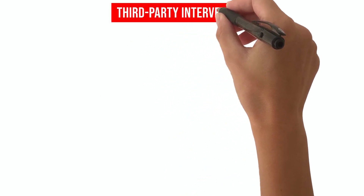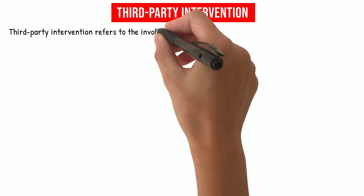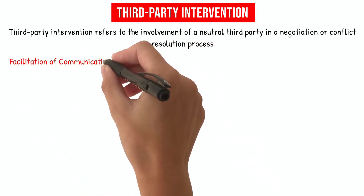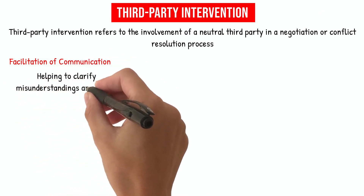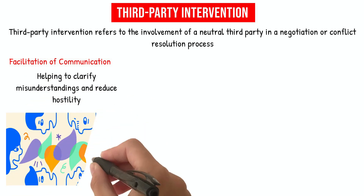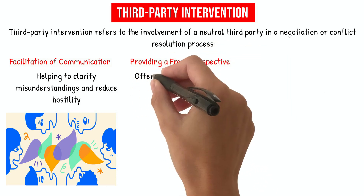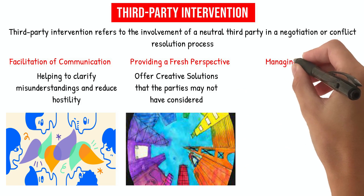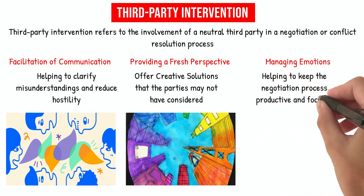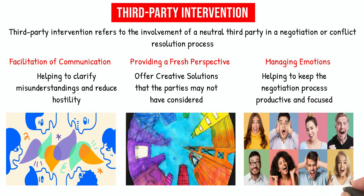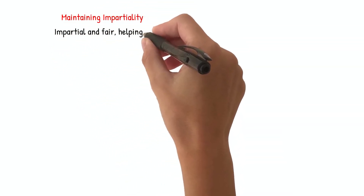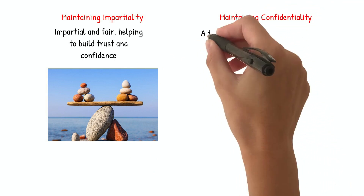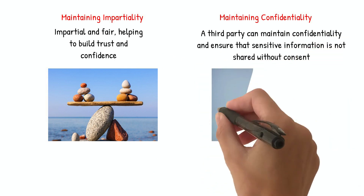Third-Party Intervention. Third-party intervention refers to the involvement of a neutral third party in a negotiation or conflict resolution process. There are several benefits of third-party intervention, including facilitation of communication, which helps to clarify misunderstandings and reduce hostility. A neutral third party can also provide a fresh perspective on the situation and offer creative solutions that the parties may not have considered. Additionally, a third party can help to manage the emotions of the parties involved, helping to keep the negotiation process productive and focused. Maintaining impartiality ensures that the negotiation process remains fair and helps to build trust and confidence.